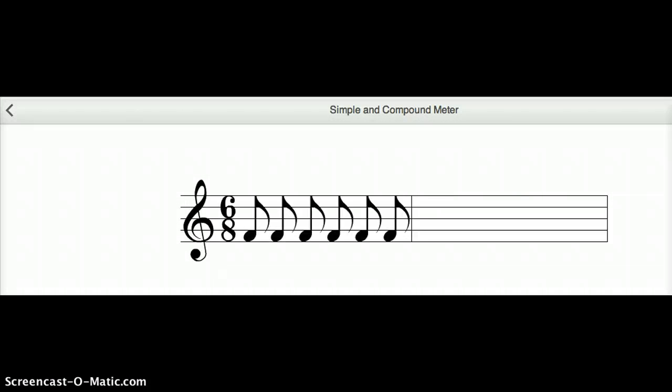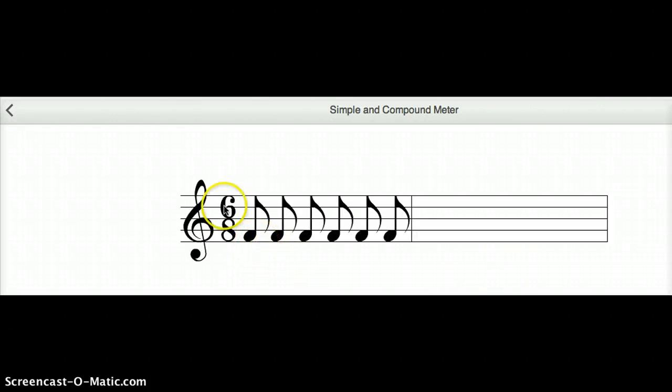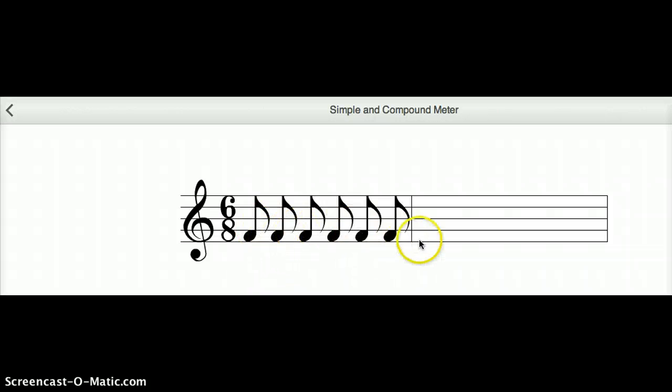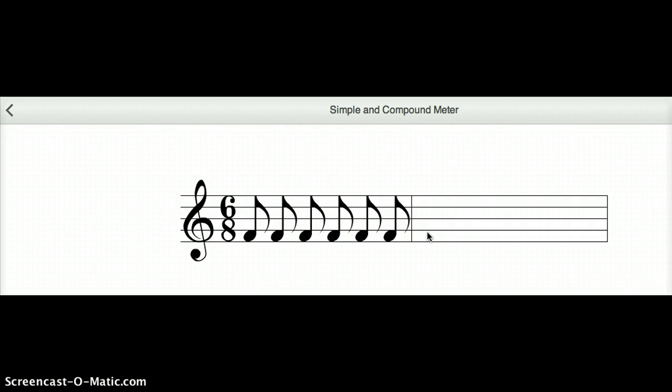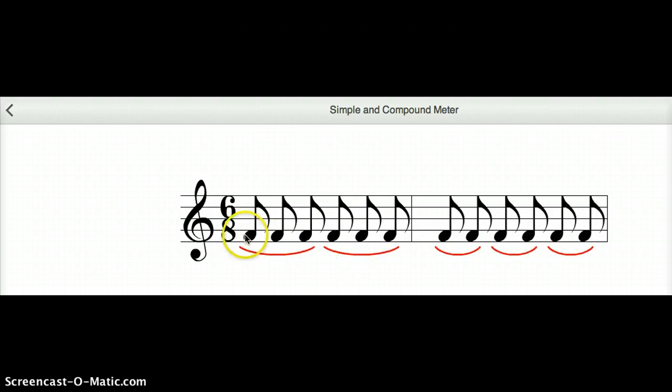Now let's talk about compound meters. In 6/8, there are six eighth notes, but you don't think of it as six eighth notes. They're actually grouped into two dotted quarter notes. So because they're grouped in three, it's going to be a compound meter.